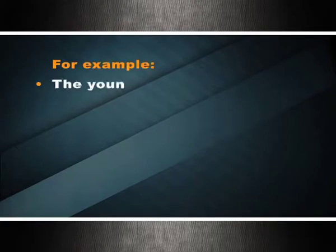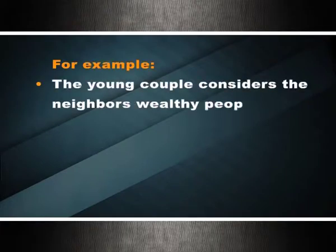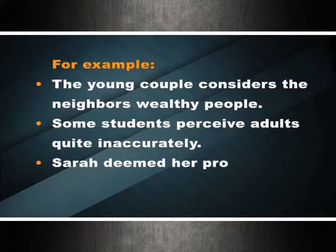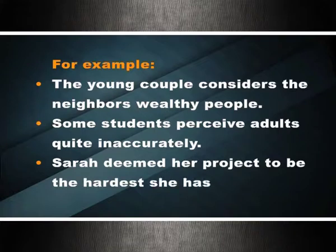Double-transitive verbs — sometimes called complex transitive verbs after the verb 'consider' — are followed by a noun phrase as a direct object and then a second noun phrase, adjective, or infinitive phrase, called a complement, which completes a clause. Examples: the young couple considers the neighbors wealthy people; some students perceive adults quite inaccurately; Sarah deemed her project to be the hardest she has ever completed.